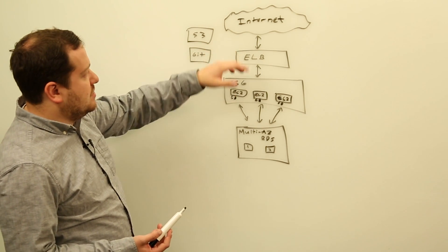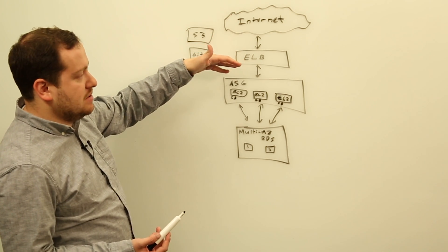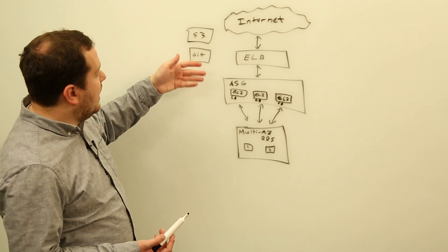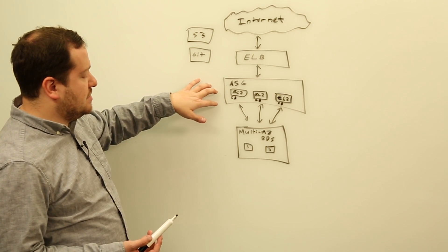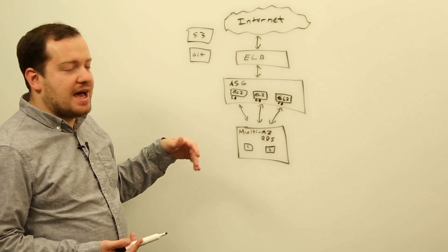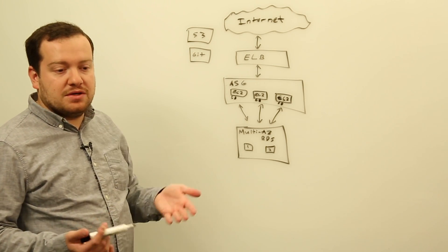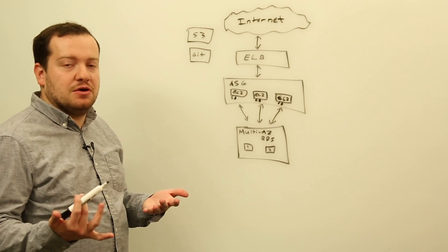We've got a load balancer, so internet traffic is going to hit the load balancer, which is going to be an ELB. And then we've got an autoscaling group behind the load balancer. The autoscaling group is going to have anywhere from one to say 100 instances depending on load.